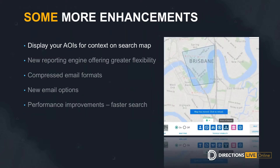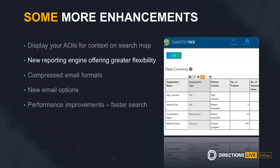There are a few more quick enhancements added in 2.0, many coming directly from user feedback. First, you can now display your areas of interest as a contextual layer on the search map — go to map settings in the tray and you'll find areas of interest as an option. We've also built in a whole new reporting engine giving more flexibility around report types. You get new options like custom filters, custom sorting by clicking column headers, and the ability to export to more formats like Excel, PDF, and even PowerPoint.